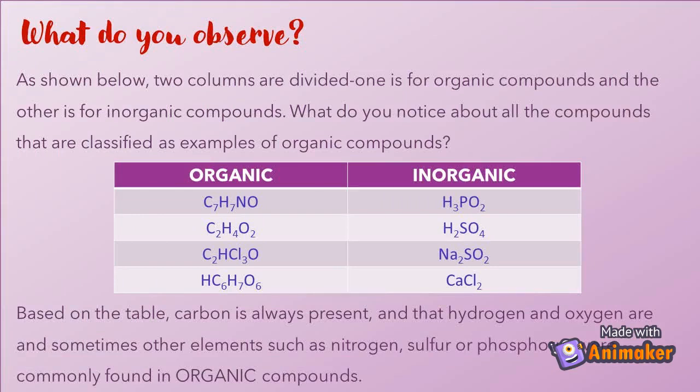What do you notice about all the compounds classified as examples of organic compounds? Based on the table, carbon is always present, and hydrogen and oxygen are as well. Sometimes other elements such as nitrogen, sulfur, or phosphorus are commonly found in organic compounds.